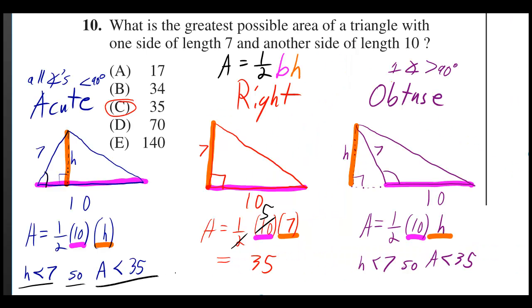So, the area is going to be less than 35. In fact, it might be one half times 10 times 6 instead of one half times 10 times 7. So, that would give you only 30 instead of 35.